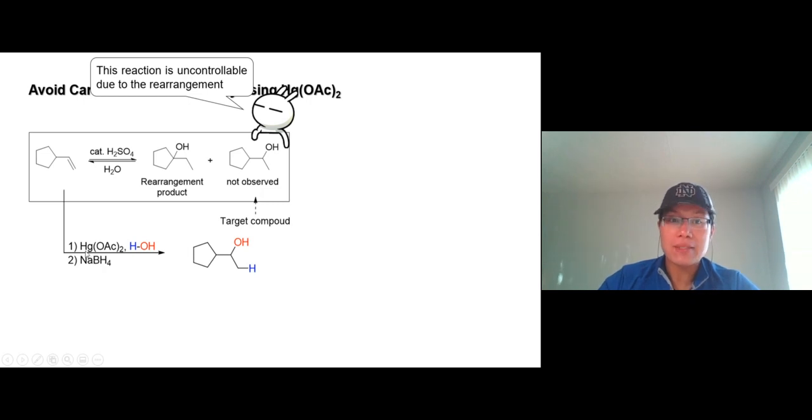So there are two steps here. The first step is adding mercury diacetate, and then water, that's your nucleophile. And then second step, we add sodium borohydride. Sodium borohydride, and there's a boron, so borohydride, to remove the mercury from the molecules.